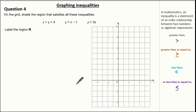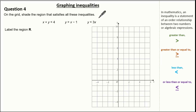Let's have a look at another question. Here we're given a grid and asked to shade the region that satisfies: x plus y is less than 4, y is greater than x minus 1, and y is less than 3x. We're asked to label the region R. See if you can give it a go — draw a table if it helps.